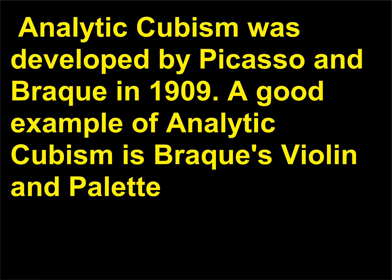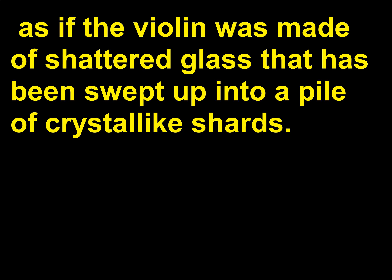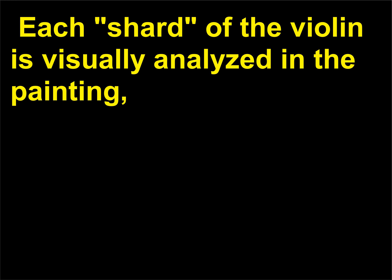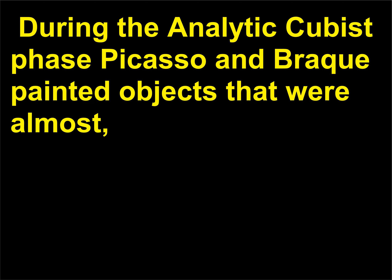Analytic Cubism was developed by Picasso and Braque in 1909. A good example of Analytic Cubism is Braque's Violin and Palette (1909–1910), in which the image of a violin has been fragmented as if the violin was made of shattered glass that has been swept up into a pile of crystal-like shards. Each shard of the violin is visually analyzed in the painting, allowing the viewer to contemplate the physical characteristics of the instrument in a new way. During the Analytic Cubist phase, Picasso and Braque painted objects that were almost, but not completely, dissolved into abstraction.